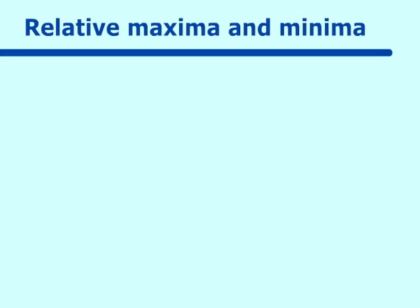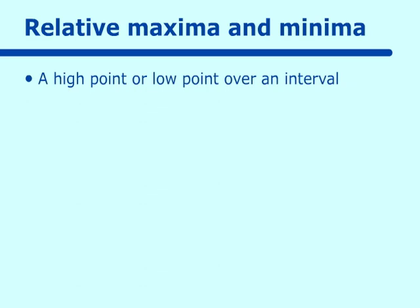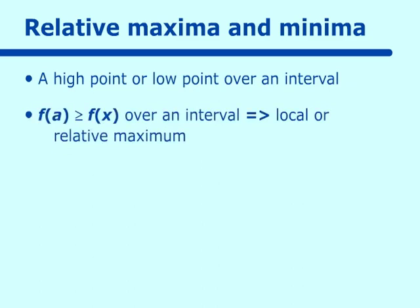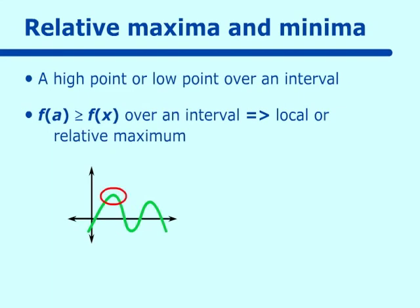Let's go on to relative maxima and minima. The relative maxima or minima are a high point or a low point over an interval on a graph. The relative maxima is read as f of a — some y value — is greater than or equal to f of x over an interval, and this is called a local or relative maximum. If we drew a graph, the relative maximum would be the highest point over an interval, and that holds true even if the curve has a sharp point.